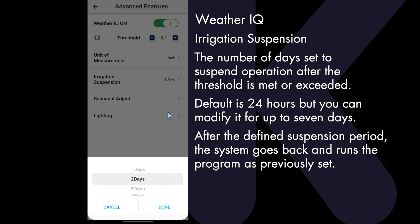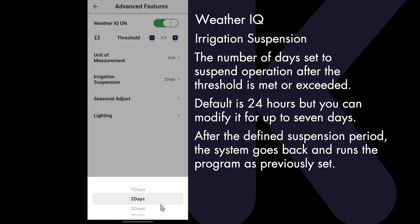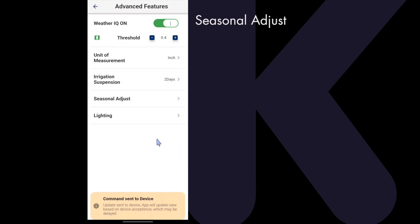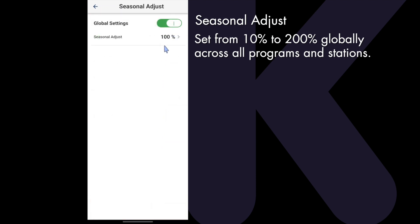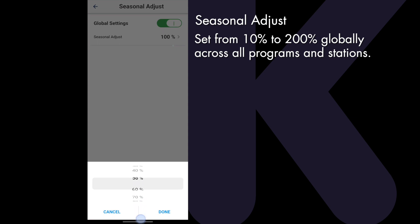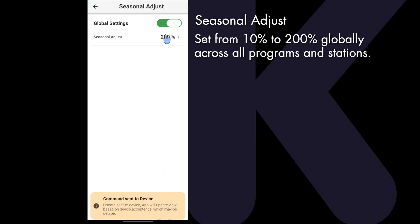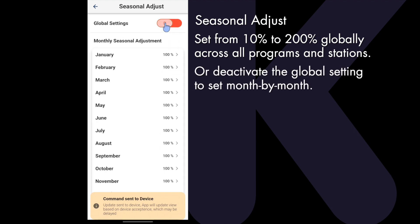After the defined suspension period, the system goes back and runs the program as previously set. Seasonal adjust can be set from 10% to 200%. The default is a global setting, meaning changes apply to all programs and all the stations. But deactivating the global setting allows you to set month by month instead.